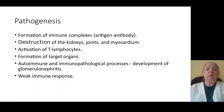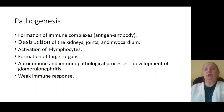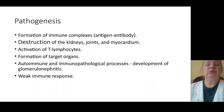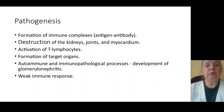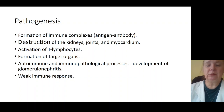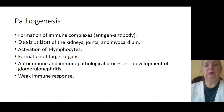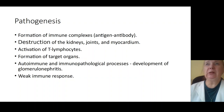Formation of immune complexes — antigen-antibody — causes destruction of different target organs: kidney, joints, myocardium. This causes activation of T-lymphocytes and formation of target organ damage, activating autoimmune and immunopathological processes which cause development of glomerulonephritis, myocarditis, and arthritis. These complications form more often in patients with weak immune response, immunodeficiency conditions, or concomitant disease.